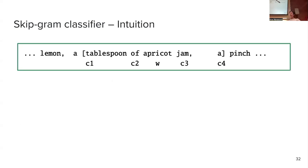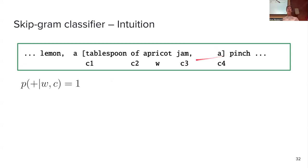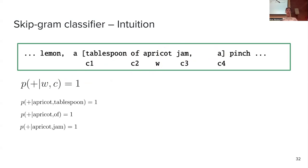Here is an example: start with a large corpus like Wikipedia, pick a word — say 'apricot' — and consider a context window of size 5, meaning two words before and two words after. For each pair of the target word and a context word, you want a classifier that, based on their vector representations, tells you whether these two words are likely to appear together in a context window of size 5. So pairs like (apricot, tablespoon), (apricot, of), (apricot, jam) should all get probability close to 1.